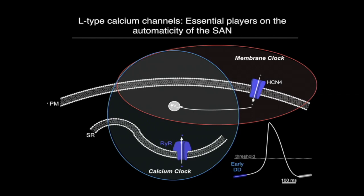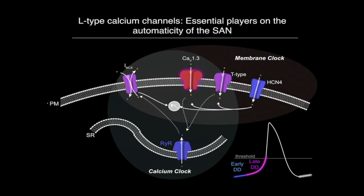Starting in the early diastolic depolarization — the more hyperpolarized phase — the slow rise is sustained mainly by the opening of HCN4 channels, which are very peculiar channels that have the ability to open at these hyperpolarized voltages, and also by calcium release from the endoplasmic reticulum through ryanodine receptors. As we start depolarizing the membrane potential into the late diastolic depolarization, we see contributions from L-type calcium channels — specifically CAV1.3 — as well as T-type channels and the sodium-calcium exchanger.